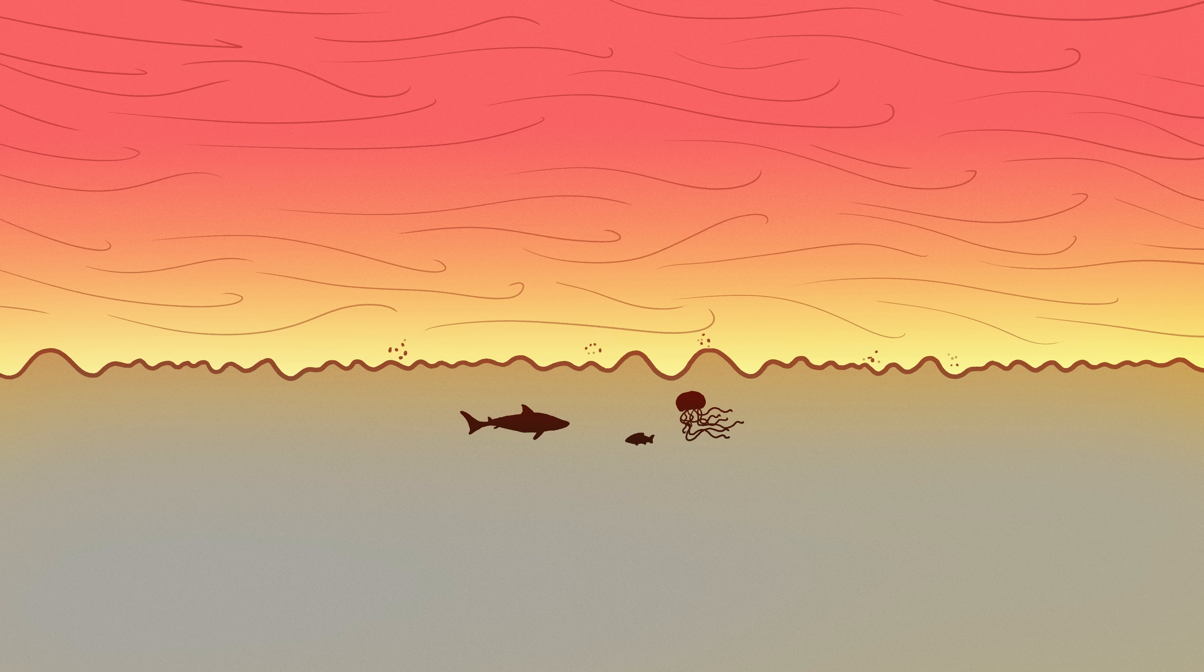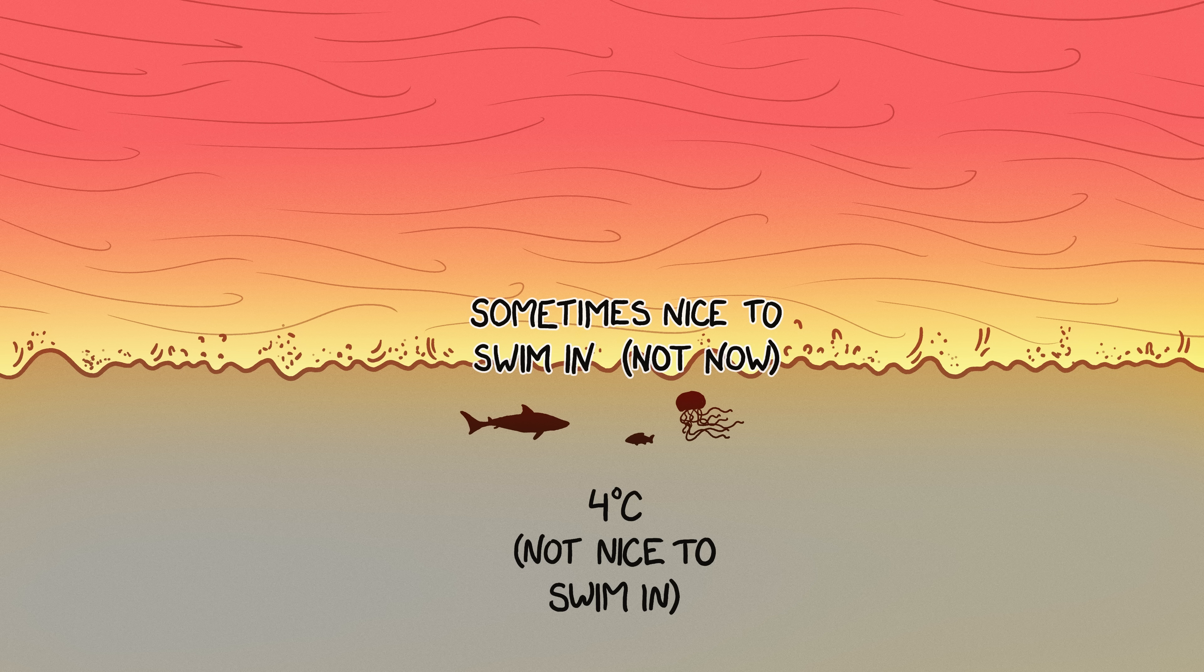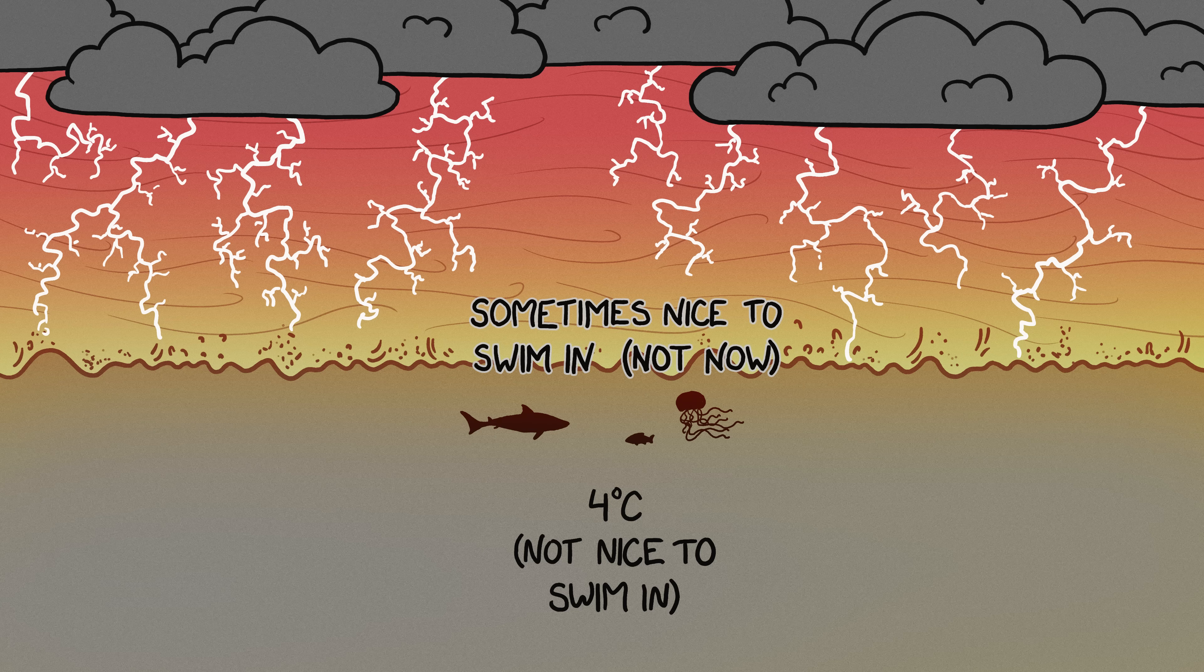But oceans are cold. Below the thin surface layer, they're a fairly uniform 4 degrees Celsius. The wind-blown spray would be heated by contact with the hot air and carried up into the layers of air still blowing above, making room for more cold spray, which would be heated and rise, and so on. The subsequent turbulent mixing would likely trigger worldwide thunderstorms over the oceans.